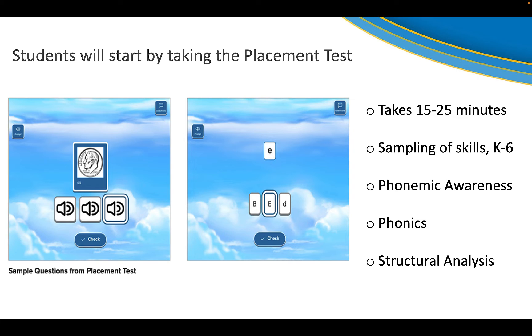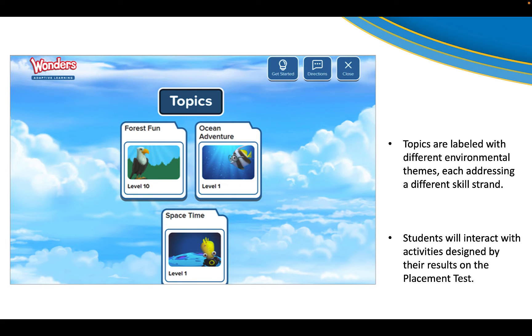Here is some idea of those different types of learning objectives. And here we can see some sample questions from that placement test. The system does include full audio and visuals for all learning objectives and activities. Once students have completed the placement test, the topics are labeled with different environmental themes that address each one of those skills. Forest fun is phonemic awareness, Ocean adventure is phonics, and structural analysis is through space time. Students can interact with these activities all based on the results of that placement test.